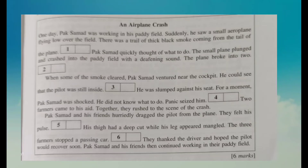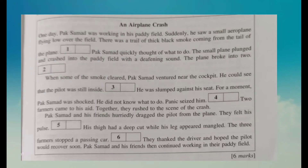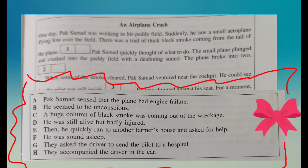Now let's move on to paragraph two. When some of the smoke cleared, Pak Saman ventured near the cockpit. The cockpit is the place where the pilot sits. He could see that the pilot was still inside — number three — he was slumped against his seat. For a moment, Pak Saman was shocked and did not know what to do. The answer is B: he seemed to be unconscious. 'Unconscious' means he is unaware — he fell into a deep sleep.